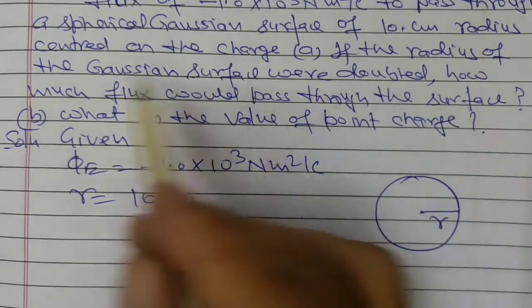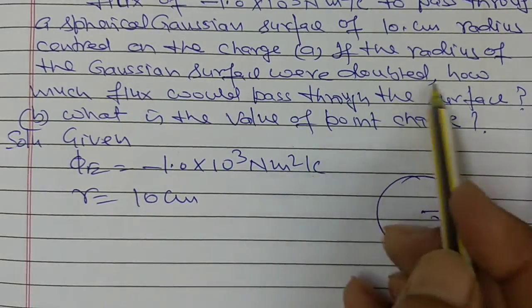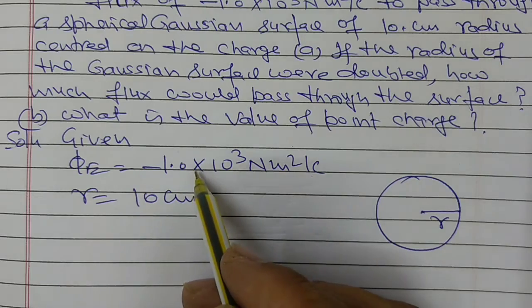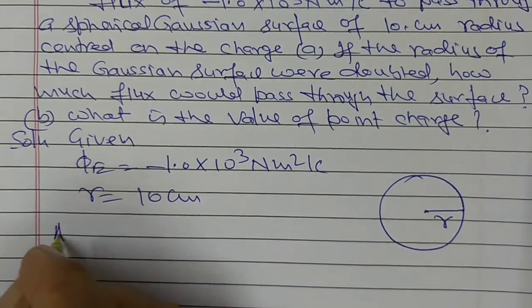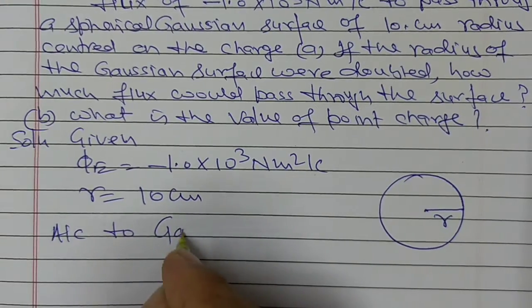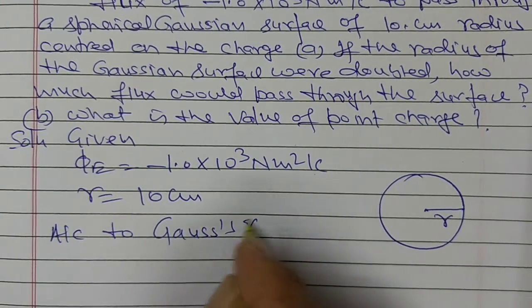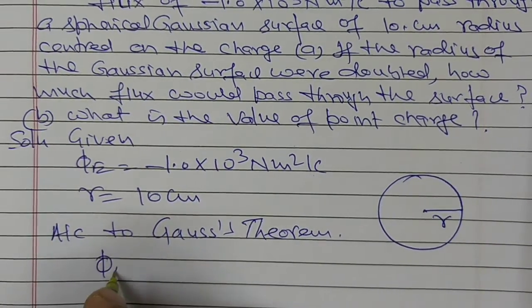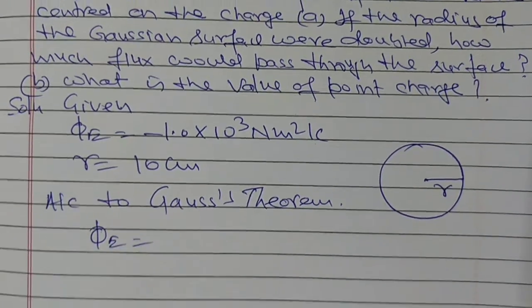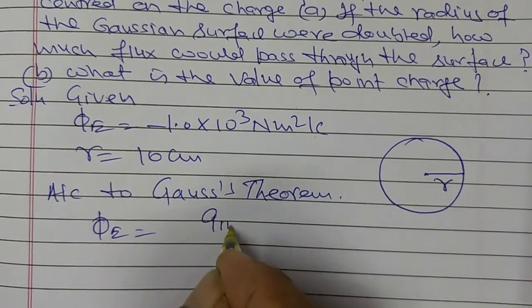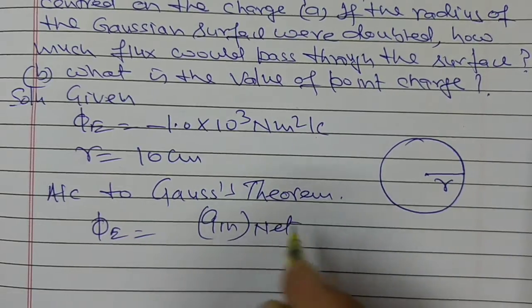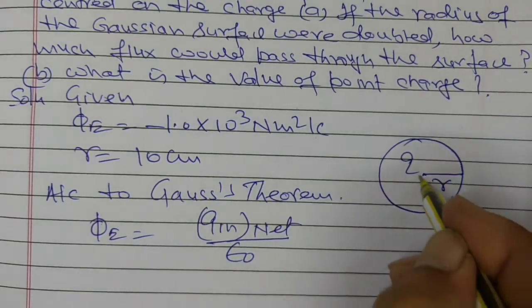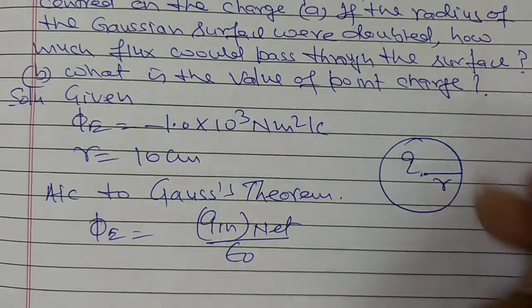Now, if the radius of the Gaussian surface were doubled, we will find that if the radius of the Gaussian surface is R, then this electric flux is equal to, according to Gauss's law, electric flux is equal to Q inside net by epsilon naught, where the charge is at the center of this spherical Gaussian surface.